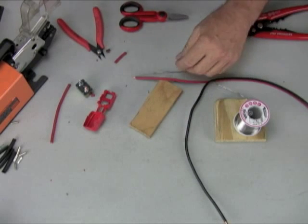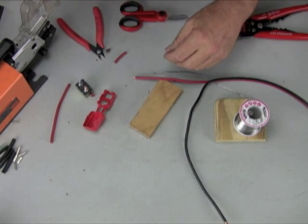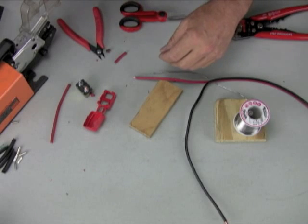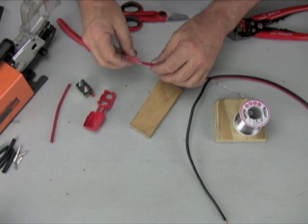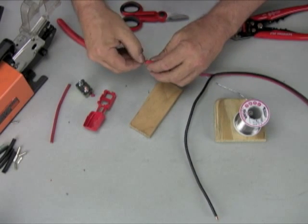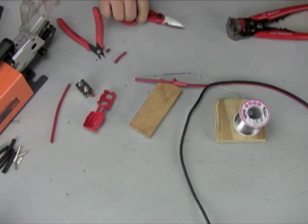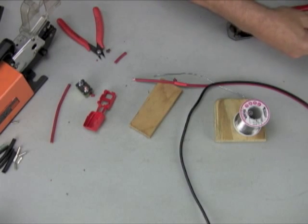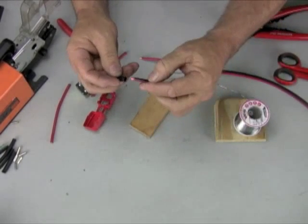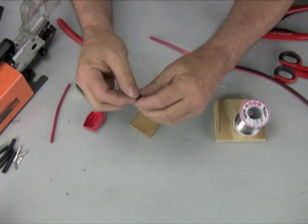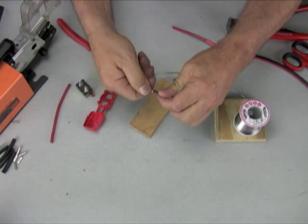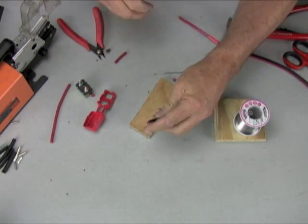Now on this end, we want to put our heat shrink on first, as always, so we don't get caught without it. You always want to put your heat shrink on first because once you put your end on there, you have to take your end off or get another end and start over if you don't do it.